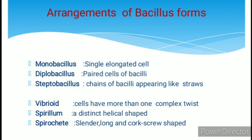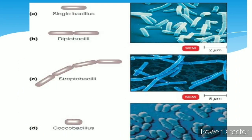Monobacillus are single elongated cells. Diplobacillus are paired cells of bacilli. Streptobacillus are chains of bacilli appearing like straws.